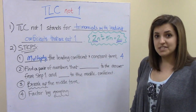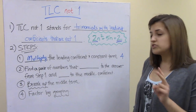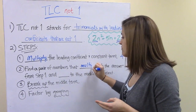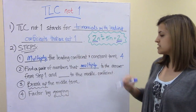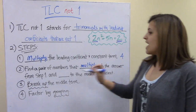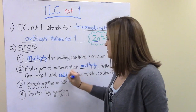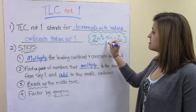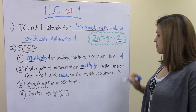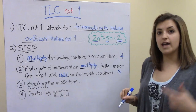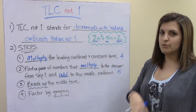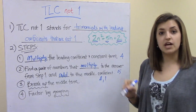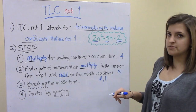Our second step is to find two numbers that multiply to whatever we got in the first step — multiply to 4 — and add to the middle coefficient, which is 5. So what numbers multiply to 4 and add to 5? The answer is 4 and 1: 4 times 1 equals 4, and 4 plus 1 equals 5.